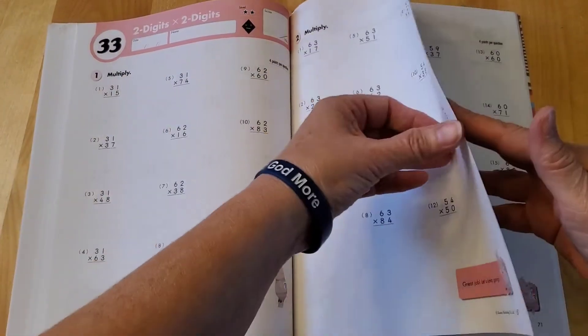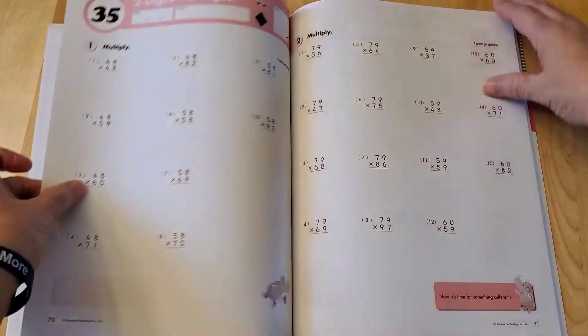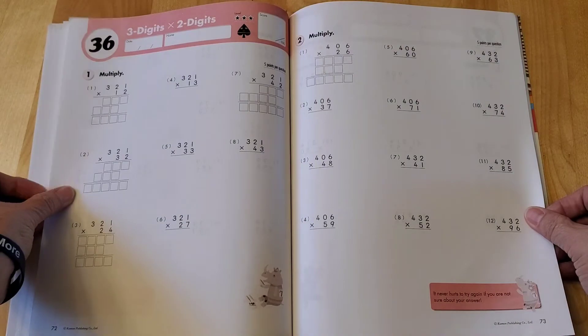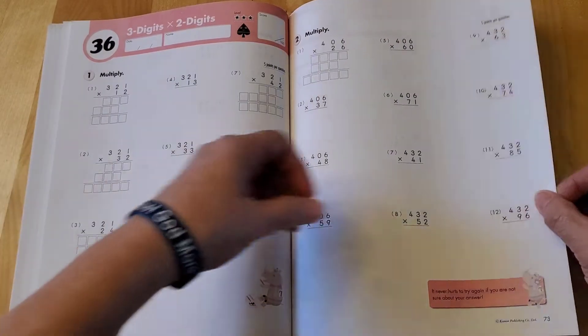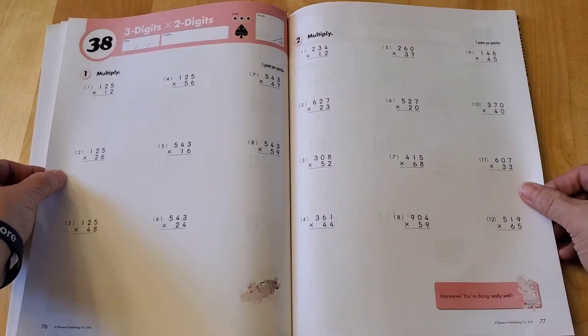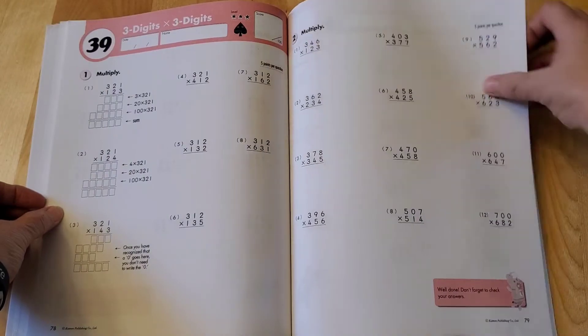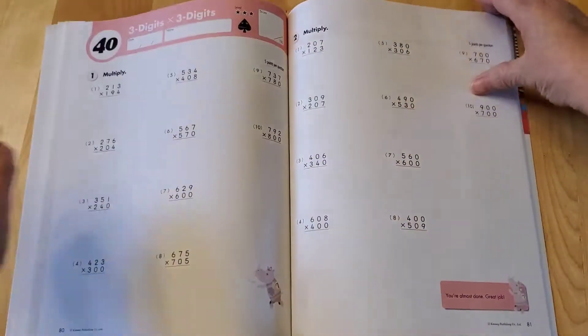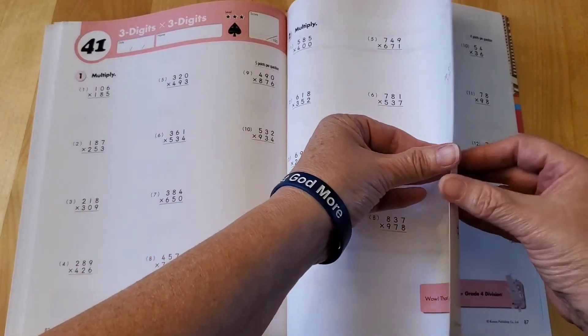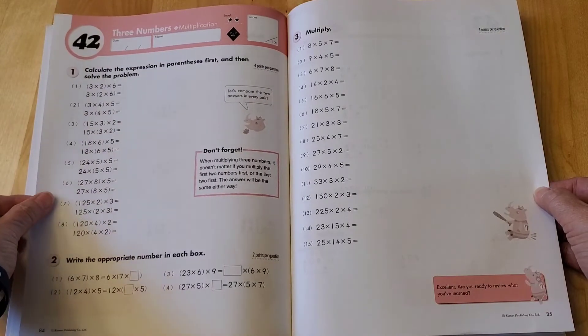Two digits times two digits, still more two digits times two digits. Three digits times two digits, then three digits times three digits.